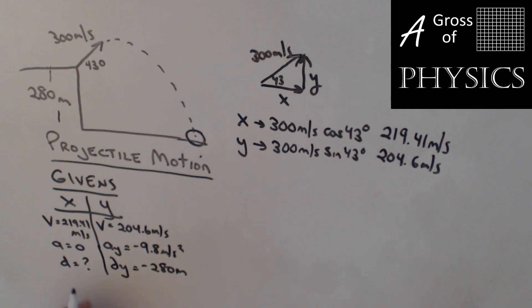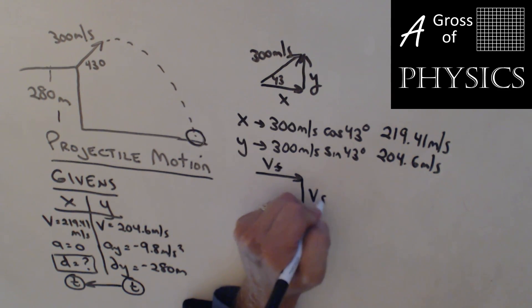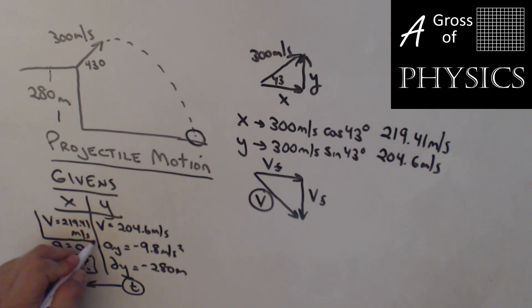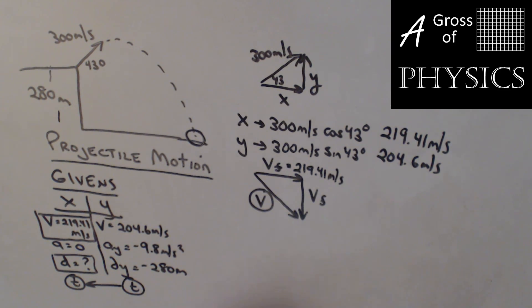Normally what we would do is find the time, plug it in on the other side, and then solve for d. But in this case, all we're concerned about is how fast it hits the ground. So in order to find how fast it hits the ground, we need to realize there's going to be an x final velocity and a y final velocity, and we're going to have to put them together and get the resultant. The beauty of the x direction is that the acceleration is zero, so the vf in the x is already 219.41 meters per second.